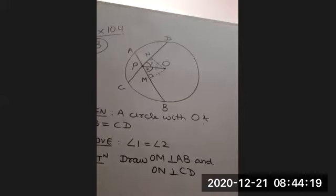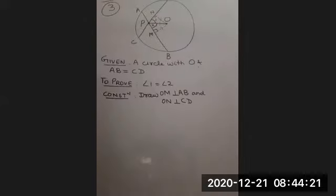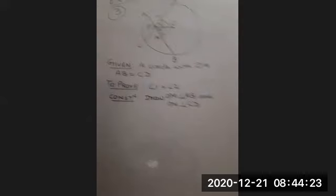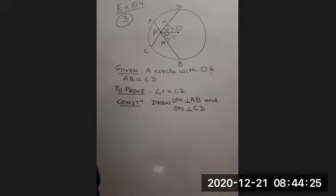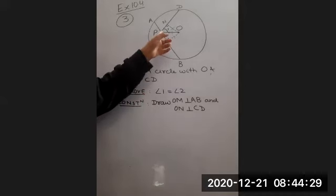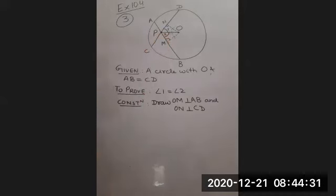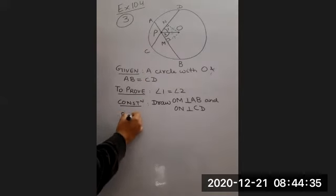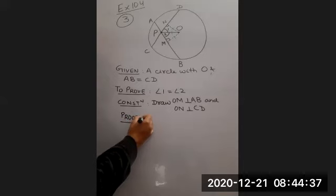So are the two triangles congruent? If two triangles are congruent, do we get that angle 1 is equal to angle 2 by CPCT? Okay, so let us see to this.